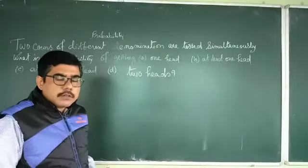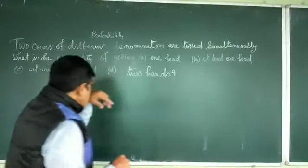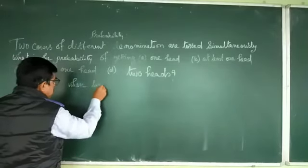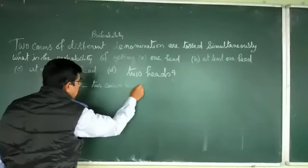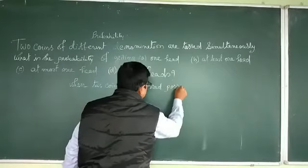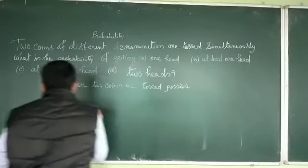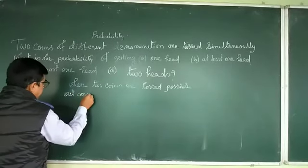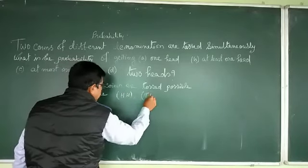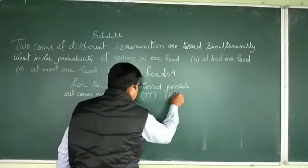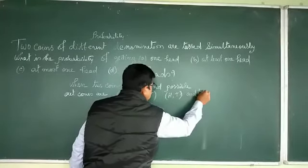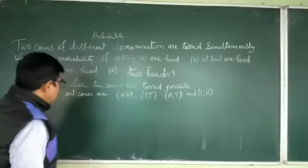First of all, we will write all the possible outcomes when two coins are tossed. The possible outcomes are: head-head, head-tail, tail-head, and tail-tail.